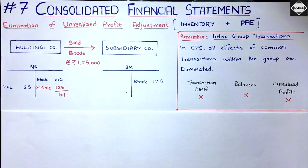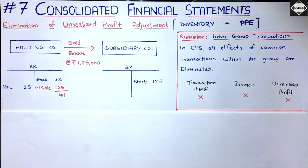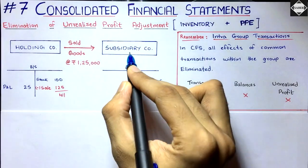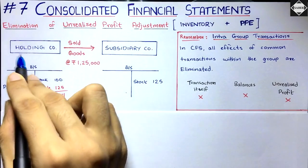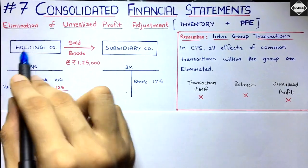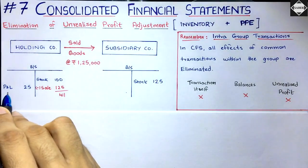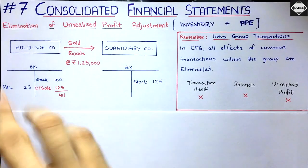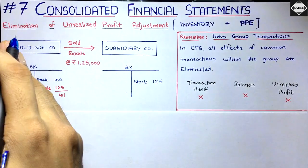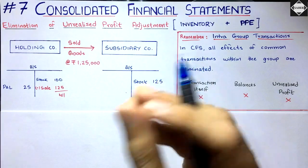This profit of twenty-five thousand would be a completely realized profit in the standalone financial statement of the holding company. In the standalone financial statement, the subsidiary is treated like a third party — like any other customer. So if anything is sold to the subsidiary at a price higher than cost and a profit is earned, that profit is treated as realized profit in the standalone financial statement.